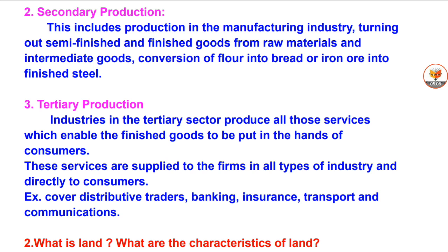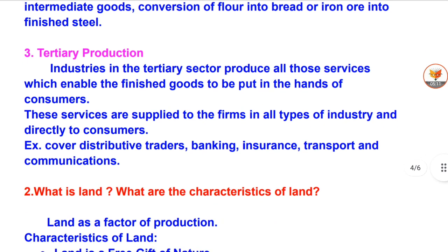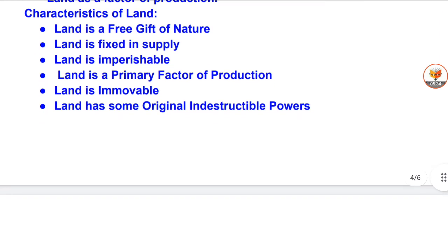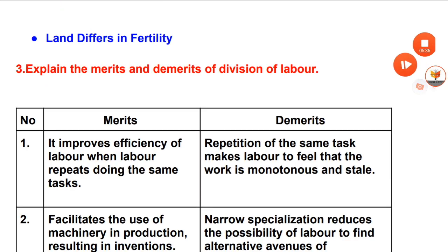Tertiary production also covers distributive traders, banking, insurance, transport and communications. Question 2: What is land? What are the characteristics of land? Land is a factor of production. Characteristics of land: land is a free gift of nature; land is fixed in supply; land is imperishable; land is a primary factor of production; land is immovable; land has some original indestructible powers; land differs in fertility.